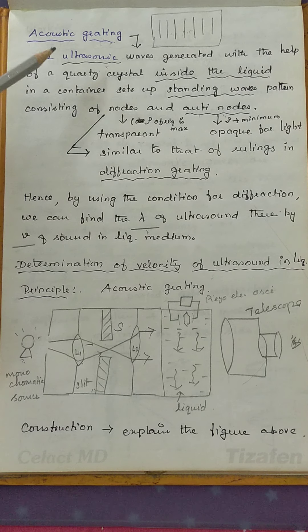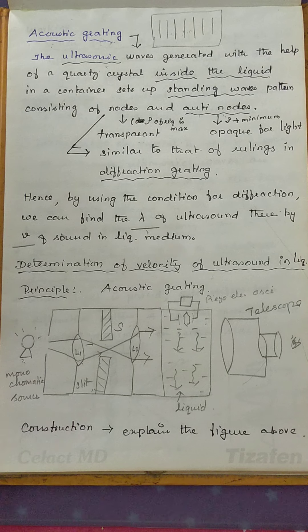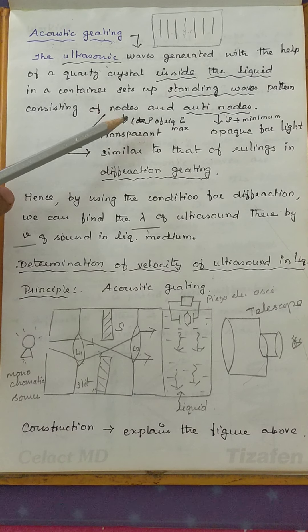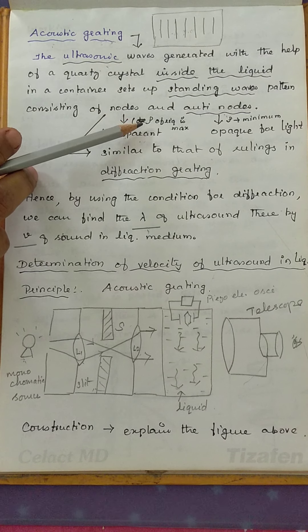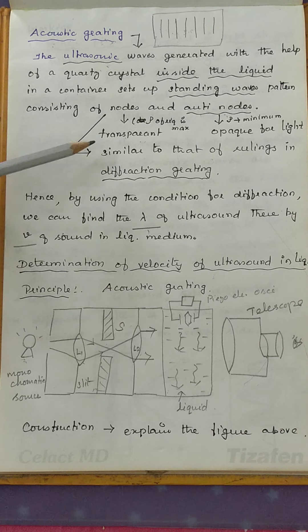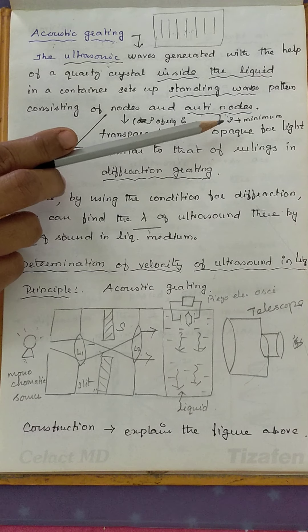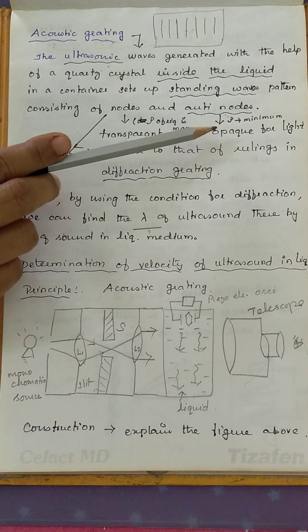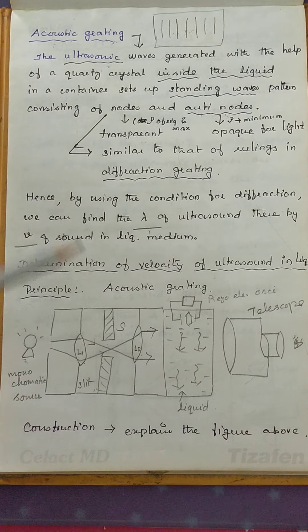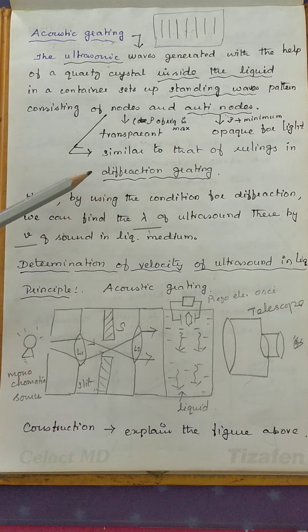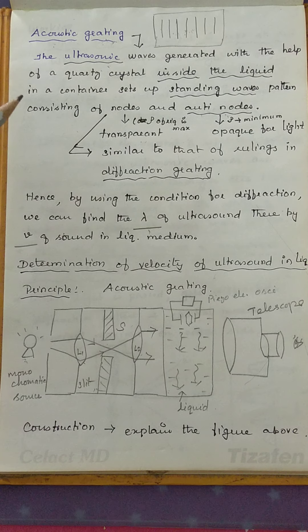Acoustic grating can be defined as follows: when ultrasonic waves are generated and forced into a liquid, a standing wave pattern is produced. The standing wave pattern consists of nodes and antinodes. At nodal points, the liquid is of greater density and serves as a transparent portion for light. At antinodal points, the density of the liquid is minimum and it serves as an opaque portion for light. Since it consists of alternating node and antinode points, it behaves as a diffraction grating — that is why it is called acoustic grating.